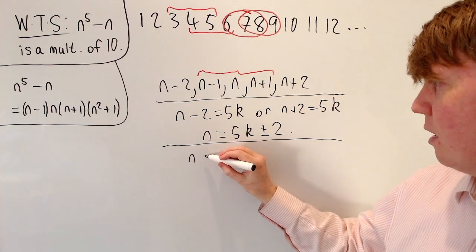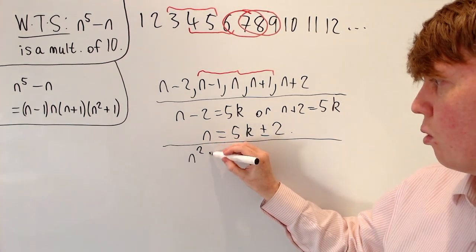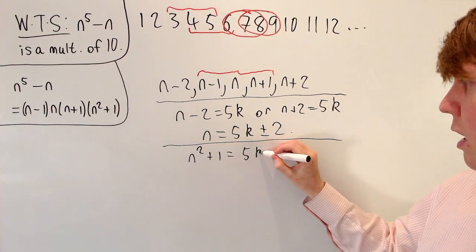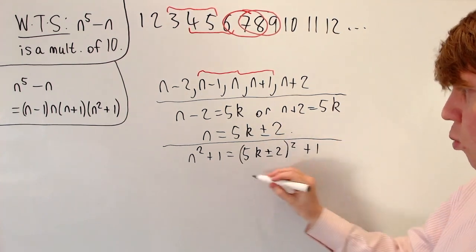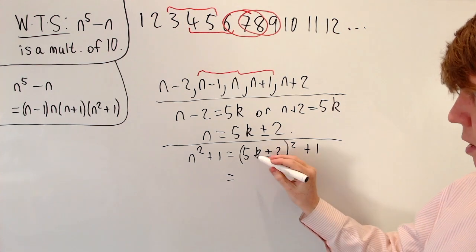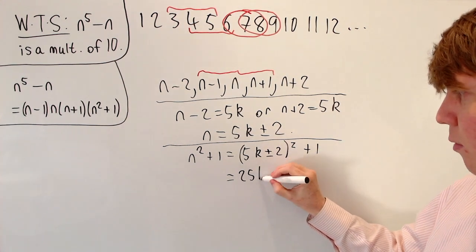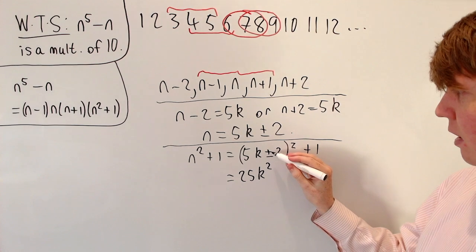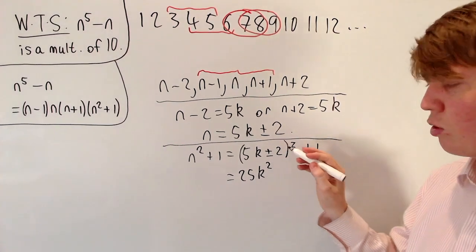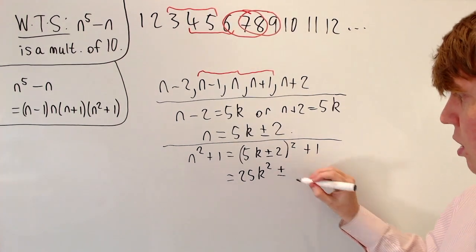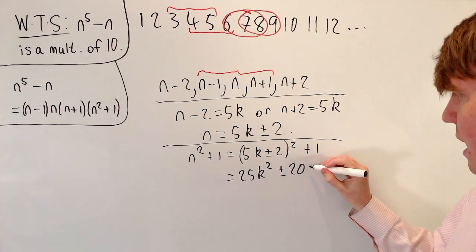So what does this mean for our n squared plus 1 term? Well, if n is 5k plus or minus 2, then n squared plus 1 is 5k plus or minus 2 all squared plus 1. Then expanding the brackets here, the 5k squared gives us 25k squared. Then in either case, it's plus 2 times 2 times 5k, or minus 2 times 2 times 5k. So we just have plus or minus 20k.